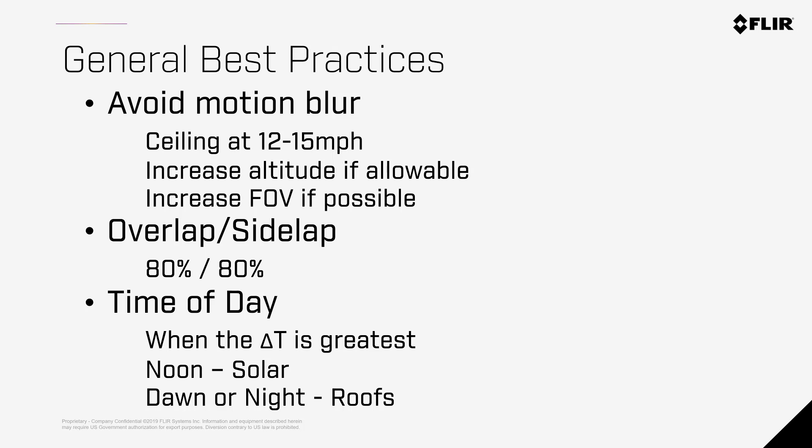Lastly, the time of day the mission is flown can significantly change the results and validity of the inspection. For thermal inspections, delta T — or the difference in temperature of your subject to its surroundings — is crucial, as this will make your anomaly much more pronounced. Solar inspections are best flown in the middle of the day when the sun is high in the sky, so you capture imagery when the panels are absorbing the most solar energy. Defects will appear hotter because they are no longer absorbing energy but reflecting it back onto the camera. RGB data for roof inspections should be done close to noon when there is the least amount of shadowing on the roof, but for the thermal inspection, it's best done when the sun goes down. Keep in mind that both solar and roof inspections require the surface to be dry.